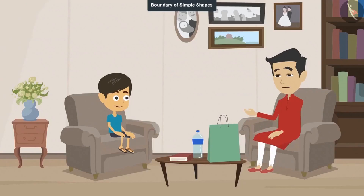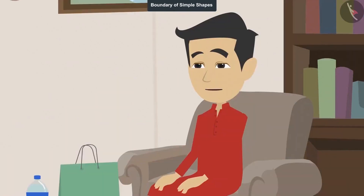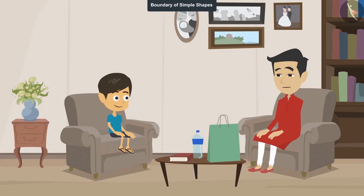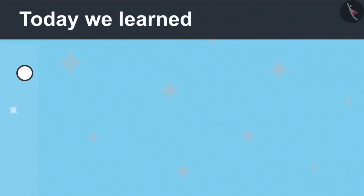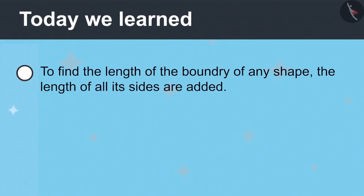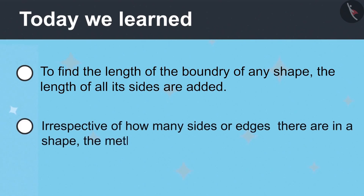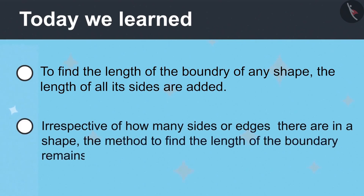You are right, Reyanj. Now you have learned how to calculate the length of the boundary. Now you can help those people in the village who do not know how to measure the length of the boundary. Today we have learned that to find the length of the boundary of any shape, the lengths of all its sides are added — and irrespective of how many sides or edges there are in a shape, the method to find the length of the boundary remains the same.